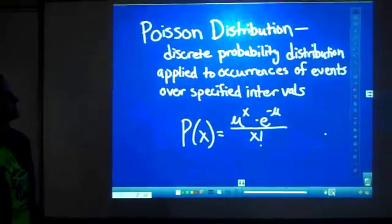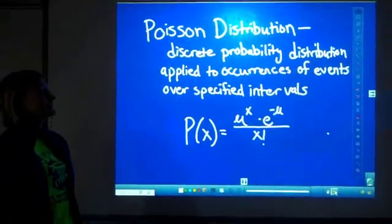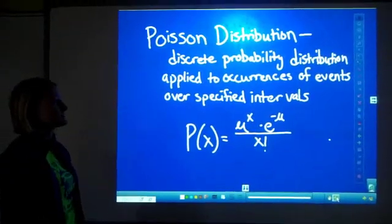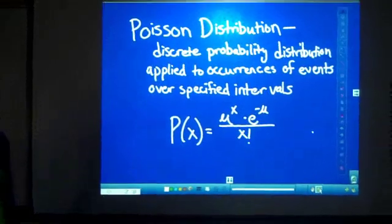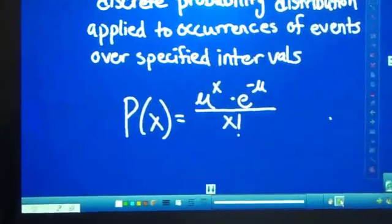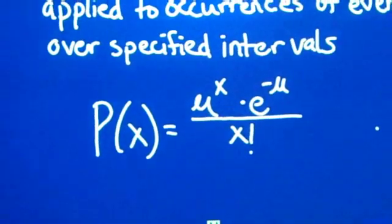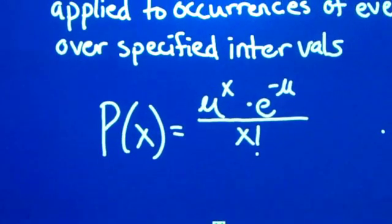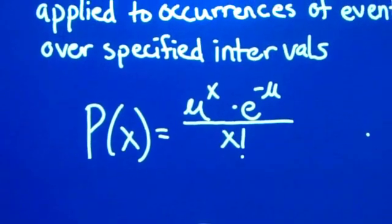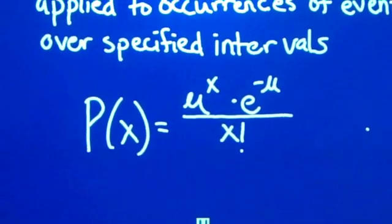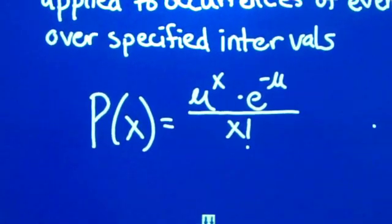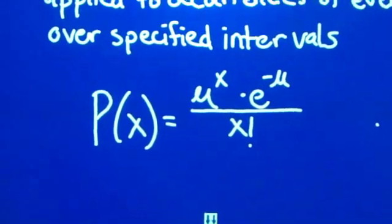Poisson distribution. A discrete probability distribution applied to occurrences of events over specified intervals. The probability formula is P(x) equals the mean to the x power times e to the negative mean, all divided by the factorial of x.